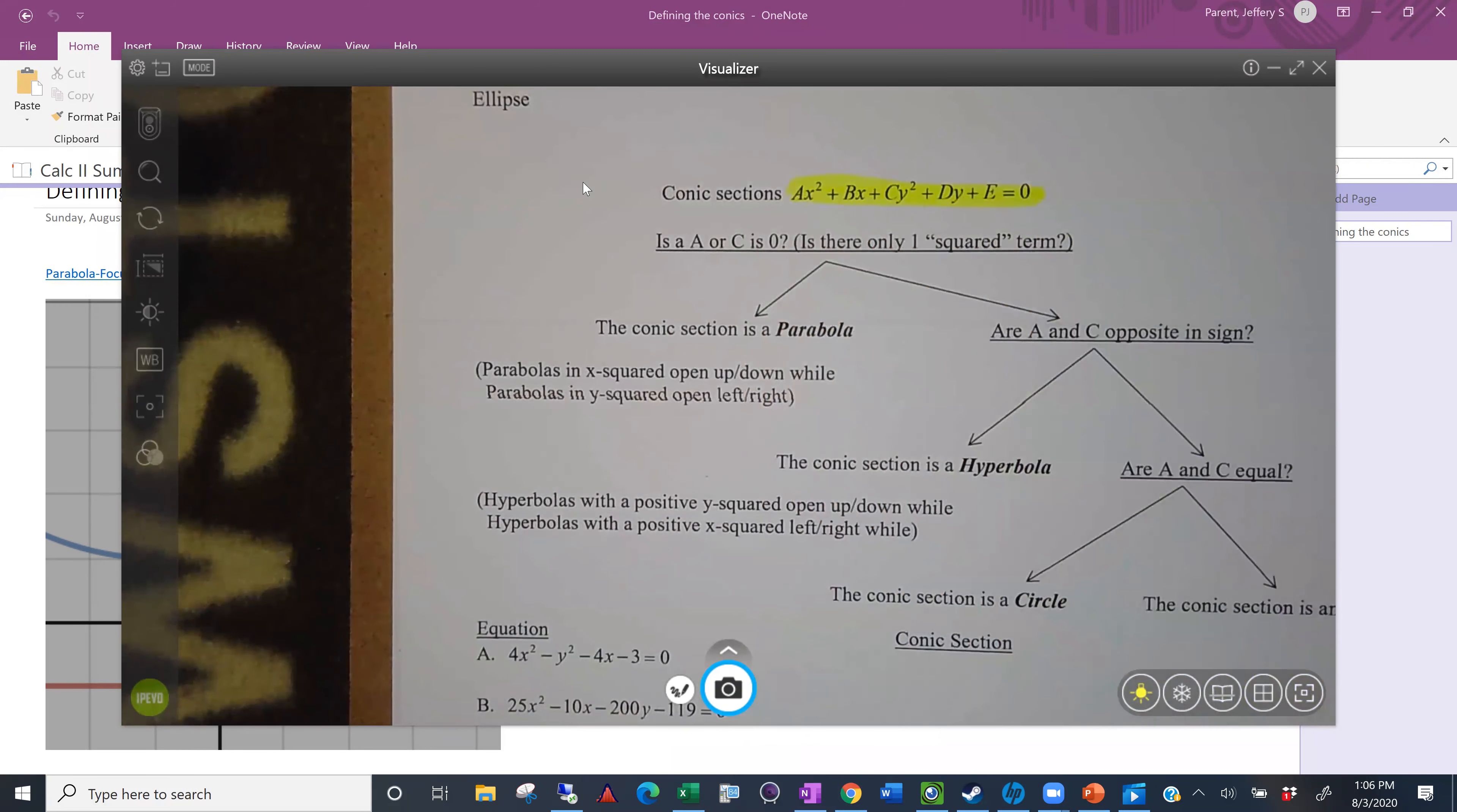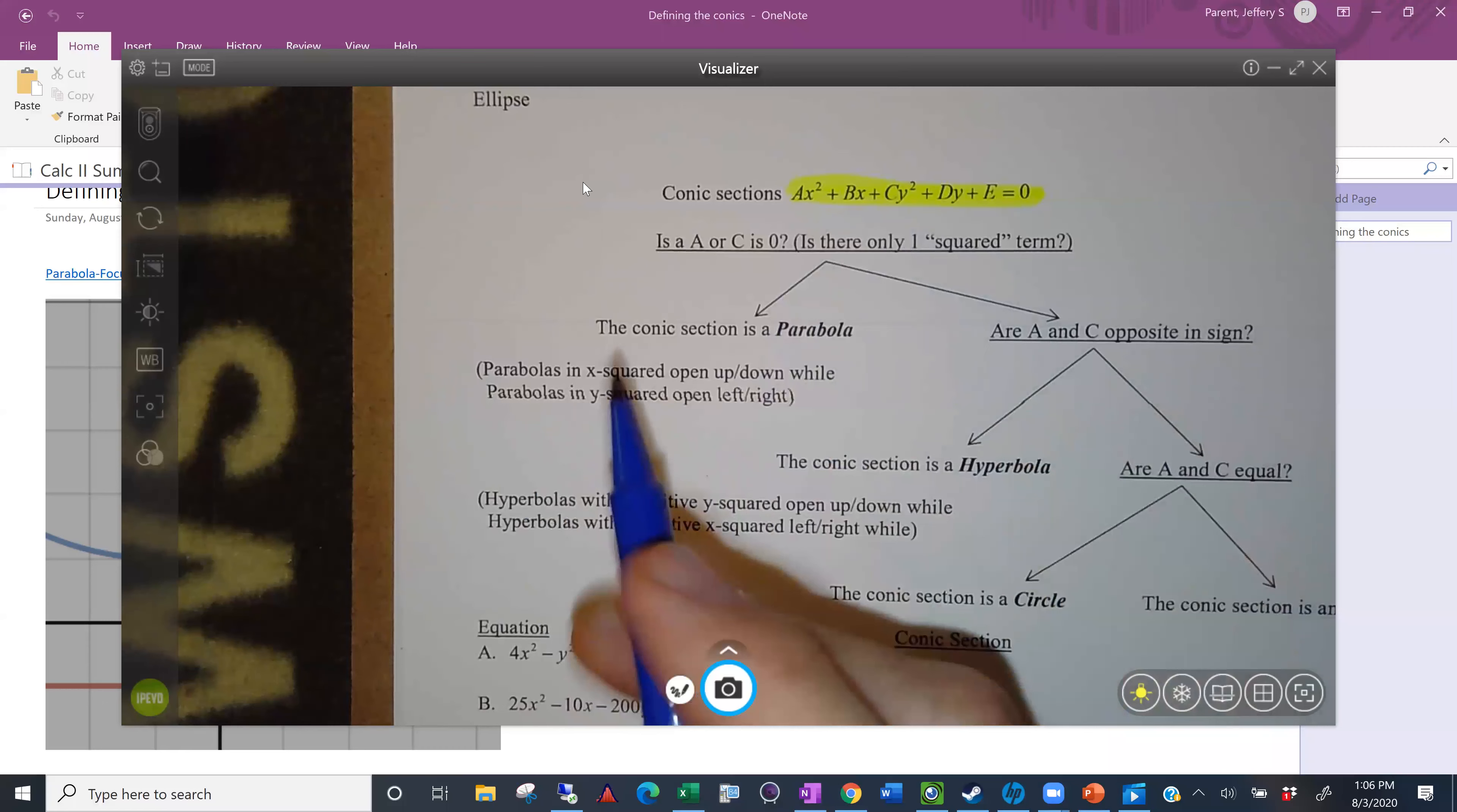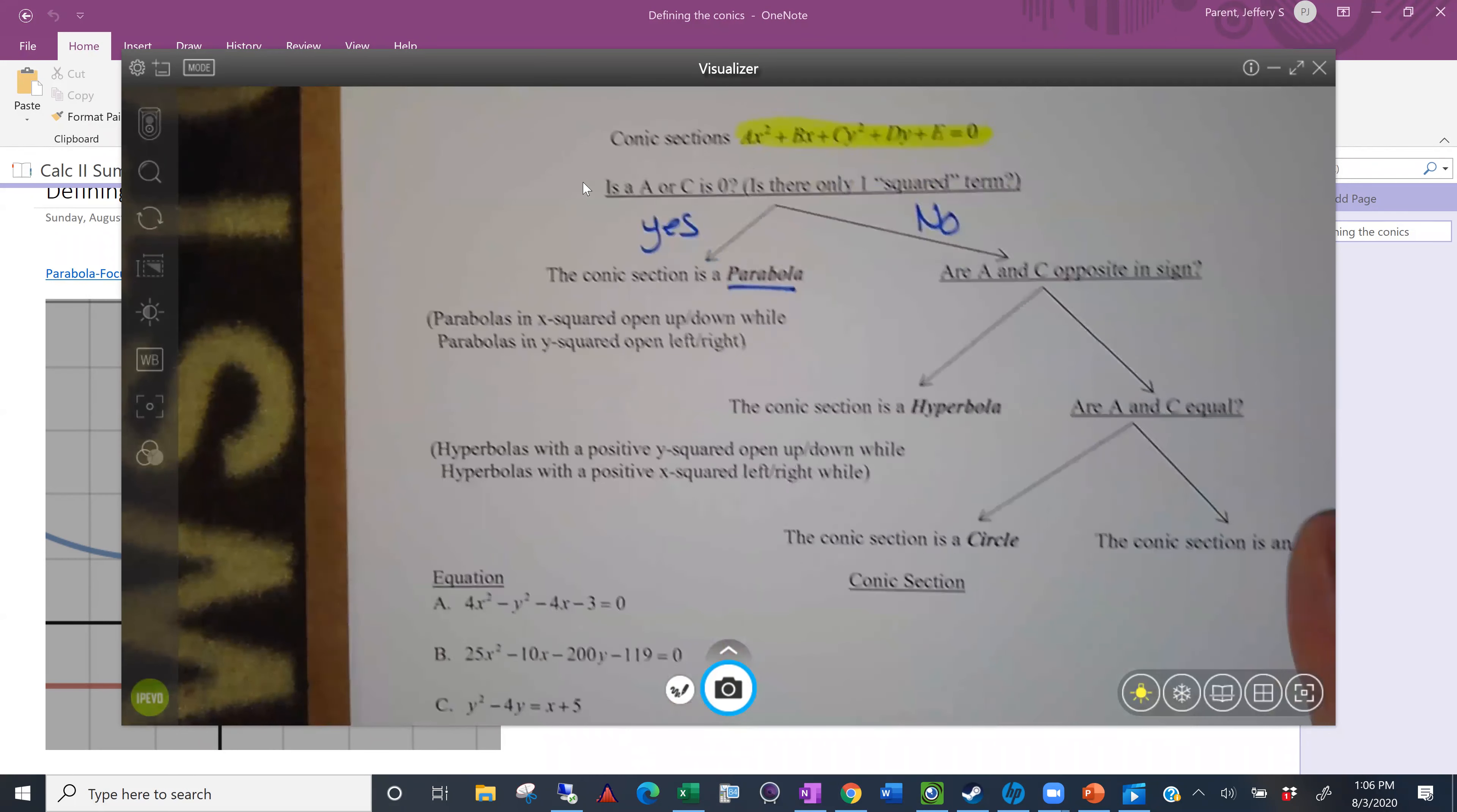The easy pickings is to decide if it's a parabola. If it's a parabola, it's only going to have one squared term. So if one of these, either A or C is zero, meaning you don't have an x squared or you don't have a y squared, if you only have one squared term, then you're dealing with a parabola. Is A or C zero? Yes. In that case, you're dealing with a parabola. If not, then you've got some more digging to do.